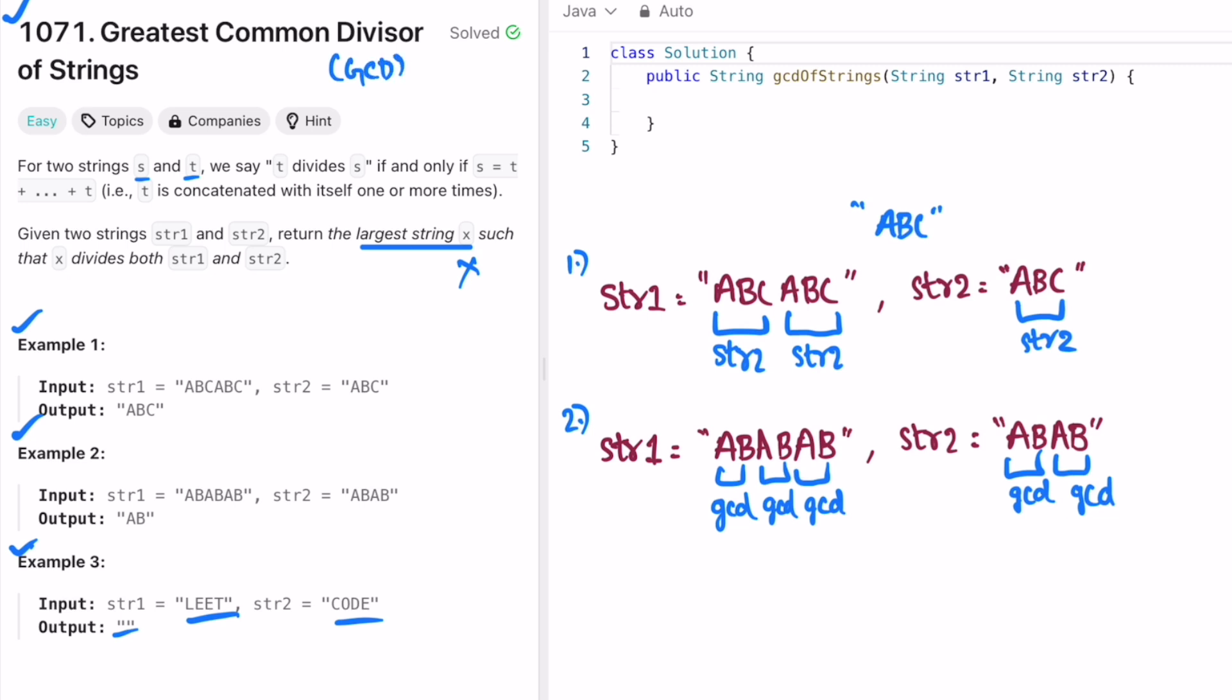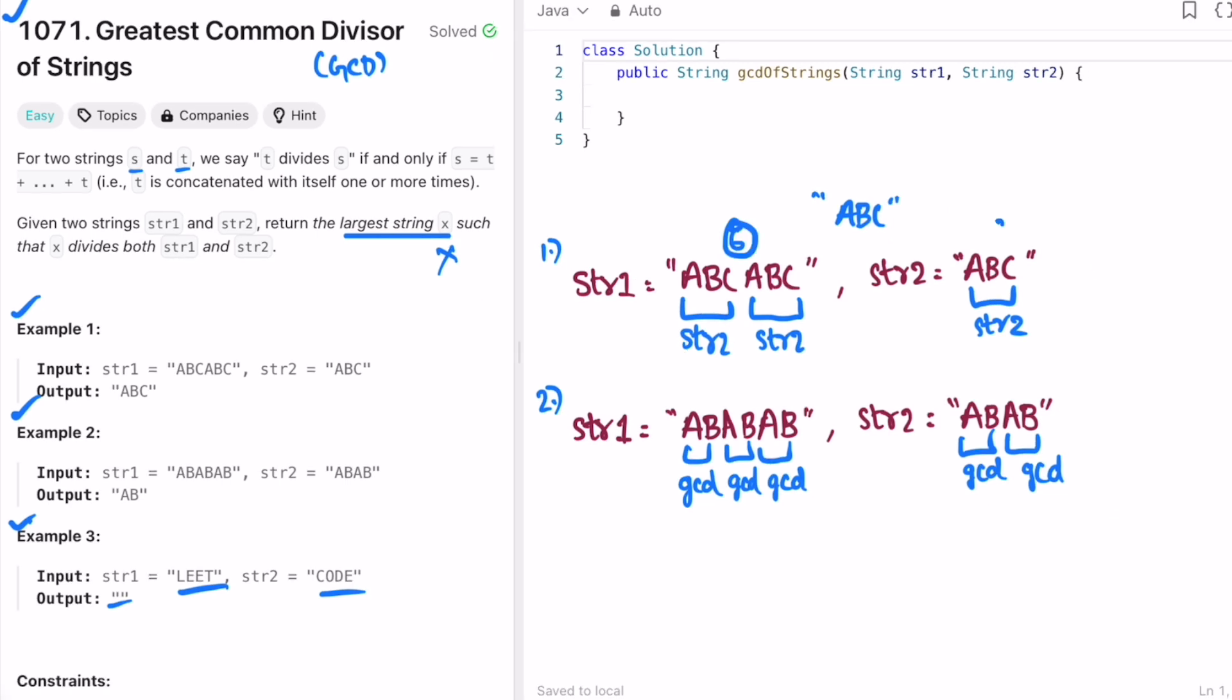So according to the question you have to find the greatest common divisor of both the strings. For any two numbers you have to find the greatest common divisor. So in this case the length of string one is six and the length of string two is three, so GCD of these two numbers six comma three is equal to three.